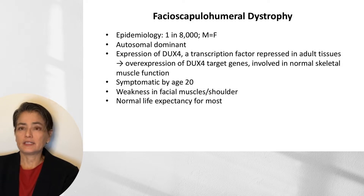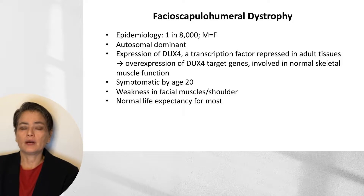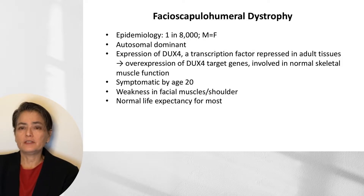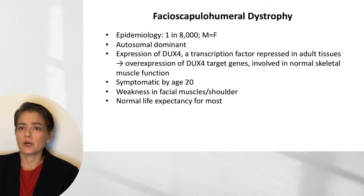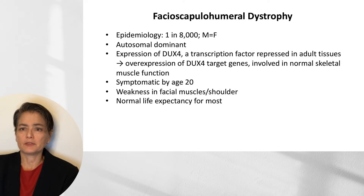Facioscapulohumeral dystrophy is slightly more common, with an incidence of 1 in 8,000 and equal distribution in males and females. It is an autosomal dominant disease due to expression of DUX4, a transcription factor typically repressed in adult tissues. With this aberrant expression, there is overexpression of DUX4 target genes, many of which are involved in normal skeletal muscle function. Patients are typically symptomatic by the age of 20, characterized by weakness in the facial muscles and shoulders. Life expectancy is normal for most.